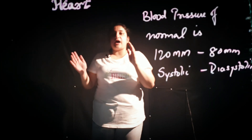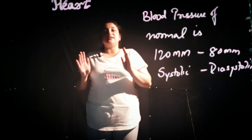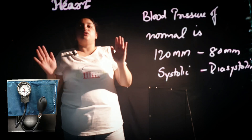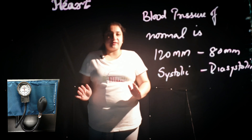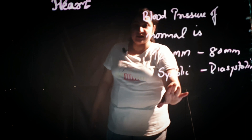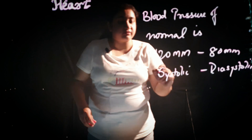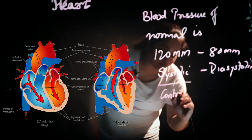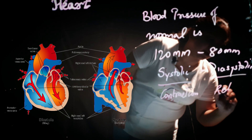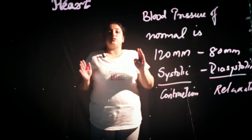Another topic related to the heart is blood pressure. Blood pressure is the pressure exerted on the walls of blood vessels. A normal person's blood pressure is 120 mm to 80 mm. This is the systolic pressure and the diastolic pressure respectively. Systolic pressure refers to the contraction of the blood vessels, and diastolic pressure refers to the relaxation of the blood vessels.